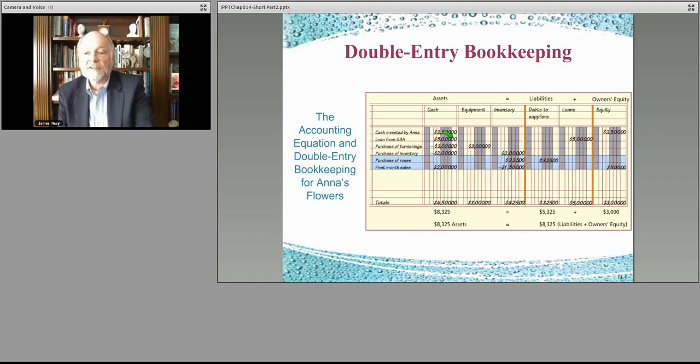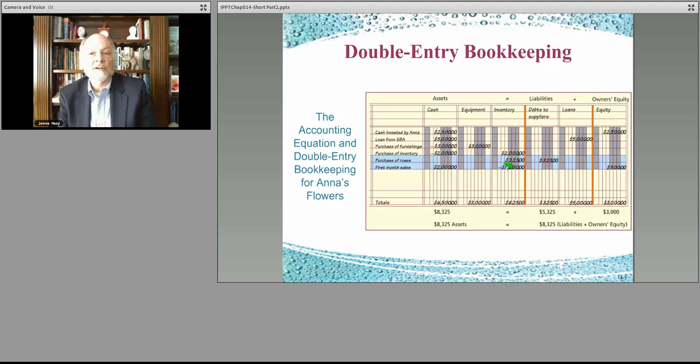The first month of sales, cash comes in the door, but the inventory leaves because now those roses and the other materials that they had leave the business. At least $1,500 of it goes to the cost of goods sold, and the other $500 goes to equity because that is the retained earnings. So they made a bit of a profit here, $500, based upon this sale. And $1,500 was relieved from inventory. So now the inventory account would have $1,500 less than it had before. It would have $825.